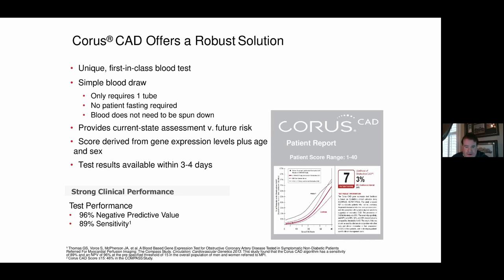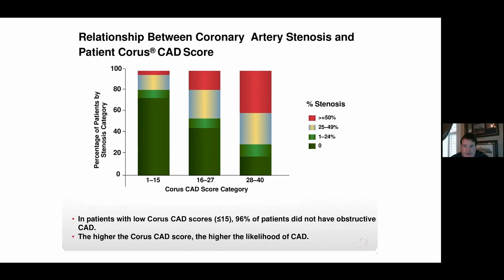Chorus CAD has strong clinical performance: 96% negative predictive value. A low score means the patient is highly likely to not have a blockage, avoiding the expensive and invasive cath lab procedure. The scoring range: 1–15 is very low likelihood of blockage; 16–27 is moderate, likely triggering additional diagnostic testing or imaging; 28–40 is high, with greater than 50% likelihood of a blockage — providing physicians with another diagnostic tool to identify high-risk patients before sending them to the cath lab.